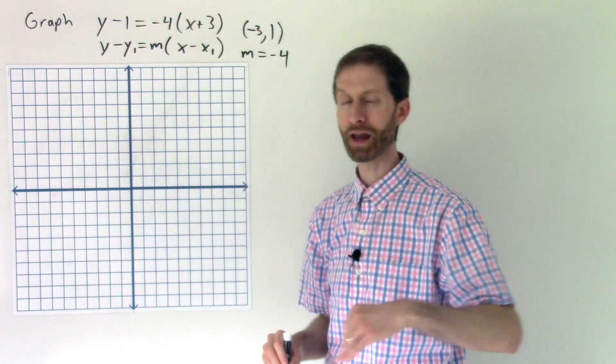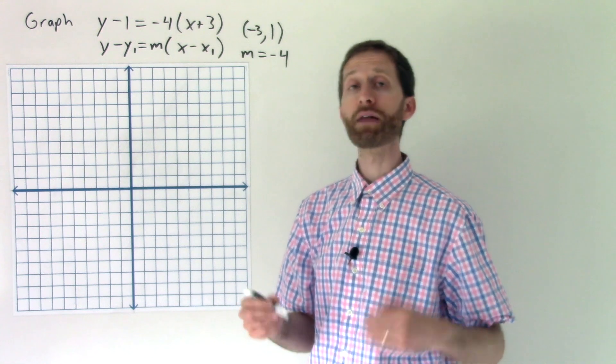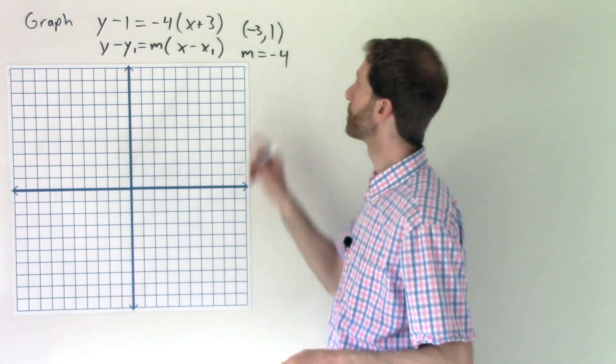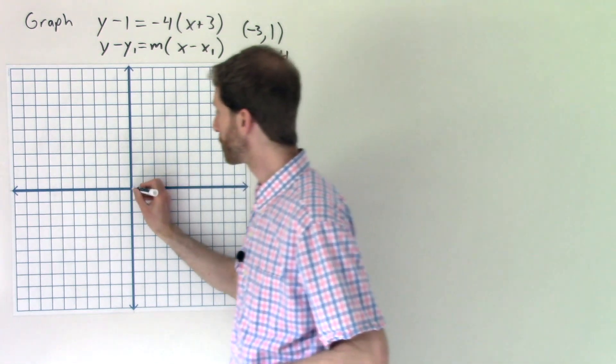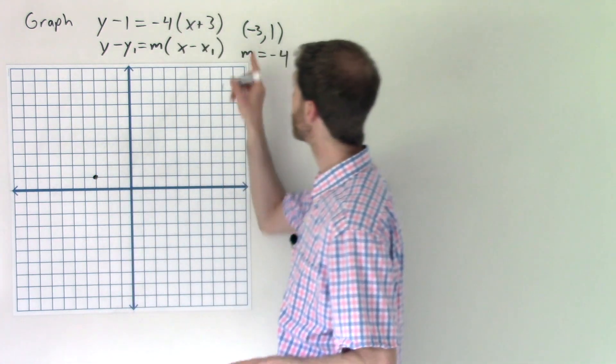Now it's as simple as just saying, well, I've got a point and I've got a slope. The point tells me a location of where I am on a line, and the slope tells me how to move on that line. So the point is negative 3, 1 over 1, 2, 3, up 1. So that's my first point right there.